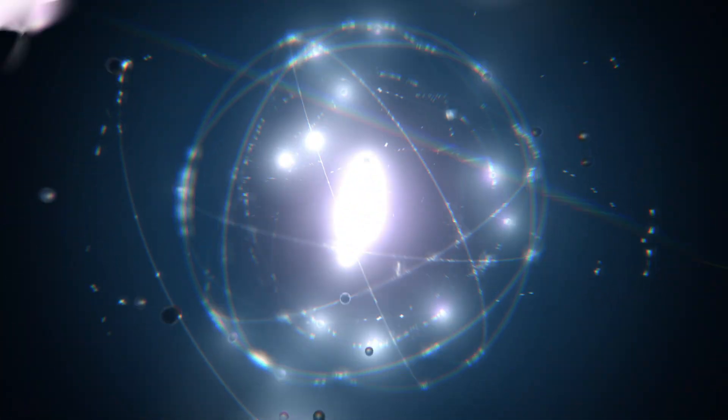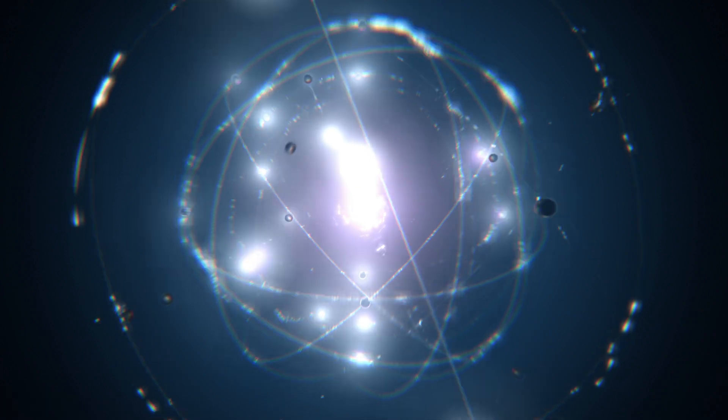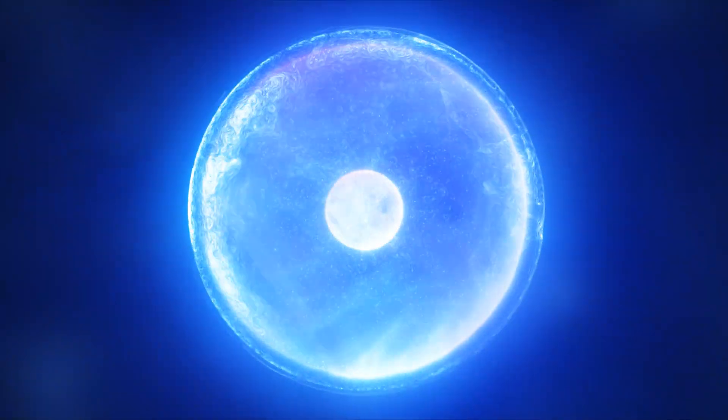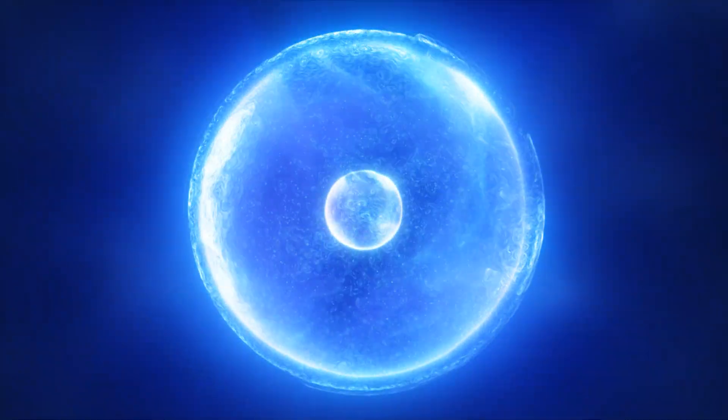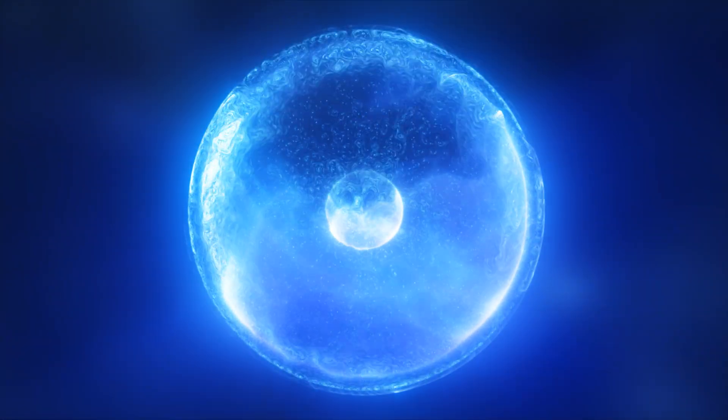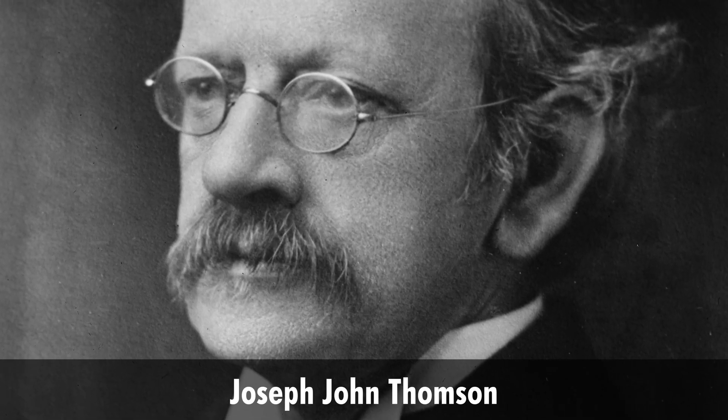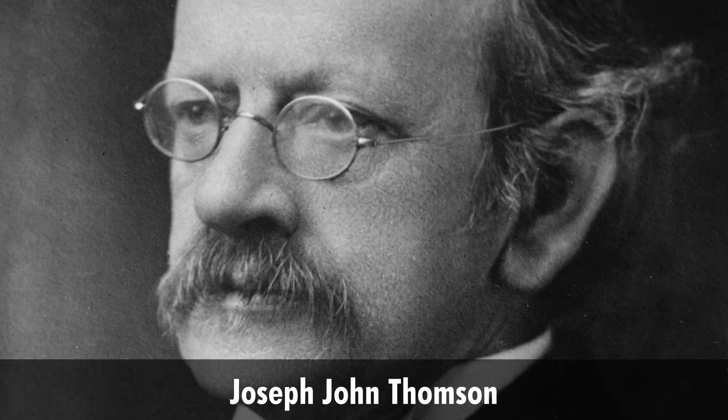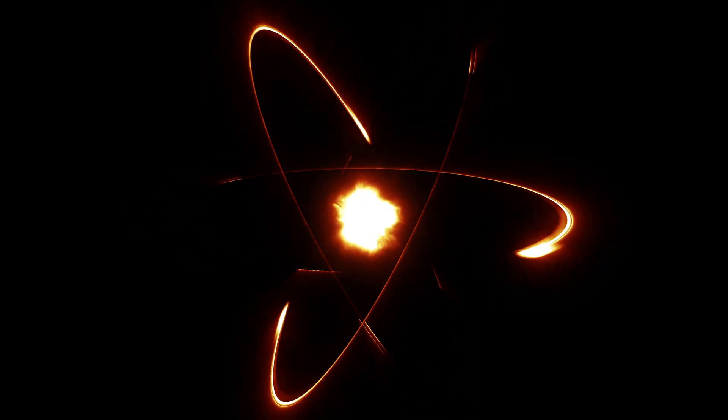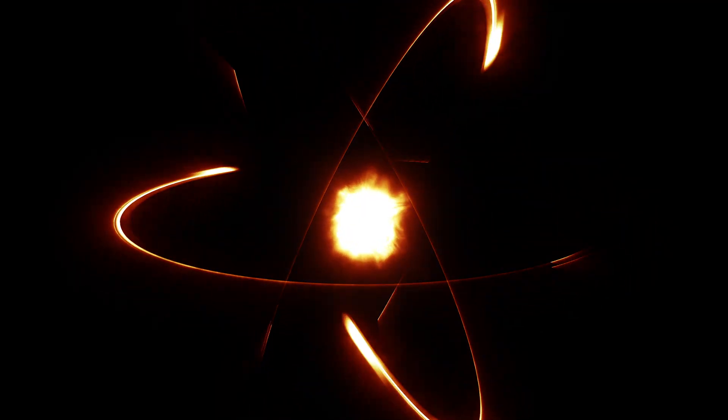Until recently, scientists thought that the smallest building block of matter was the atom. In other words, according to them, everything in the universe could only consist of atoms at the most basic level. However, in 1897, Joseph John Thompson argued that this was wrong. He announced that he had discovered a particle in the subatomic world called the electron, which is 1,000 times smaller than the atom. Thus, the journey to the subatomic world began.